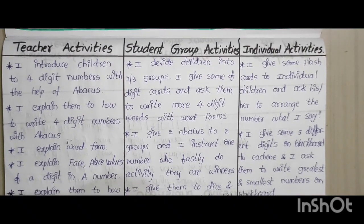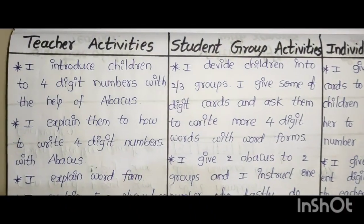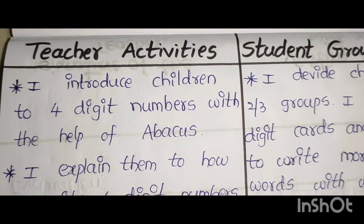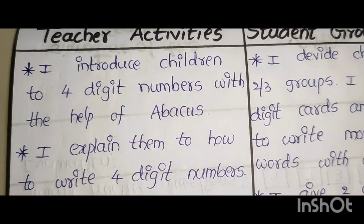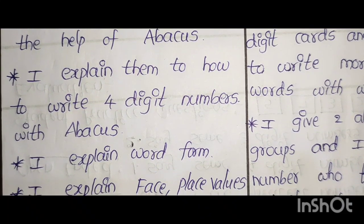Next one is activities. Teacher activities, group activities, individual activities. Teacher activities: I introduce children to 4 digit numbers with the help of abacus. I explain them to how to write 4 digit numbers with abacus. I explain word form.